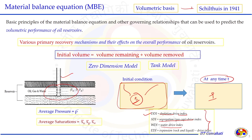Similarly, the average saturations of oil, gas, and water within this volume or tank are denoted SO, SG, and SW. At the initial condition these become SWI (initial water saturation), SOI (initial oil saturation), and SGI (initial gas saturation). With this zero-dimension model we can relate how the volume is changing within the tank model or control volume.